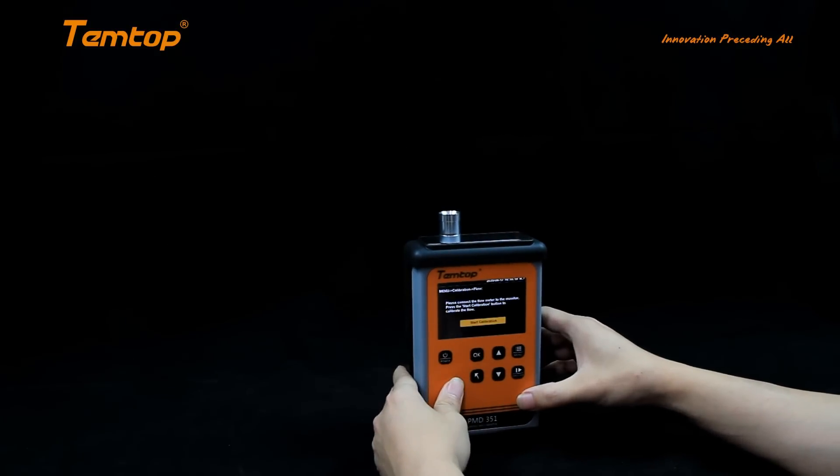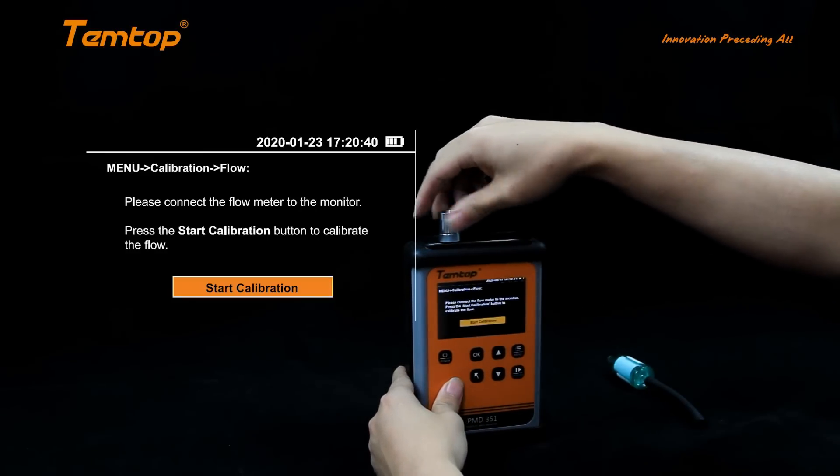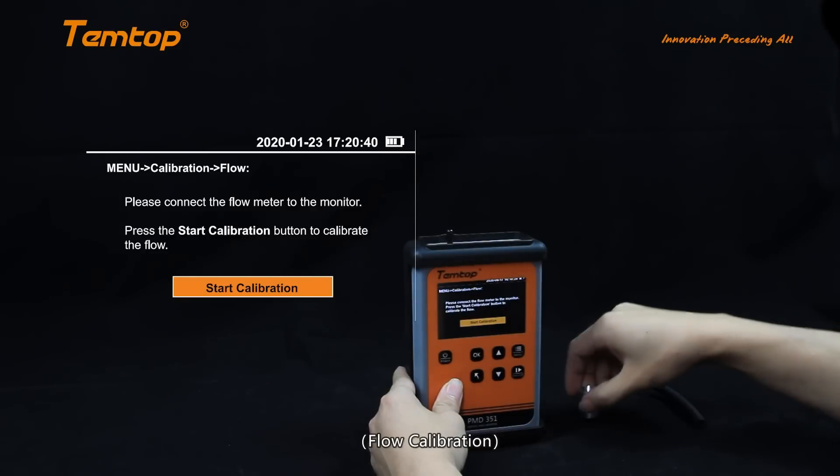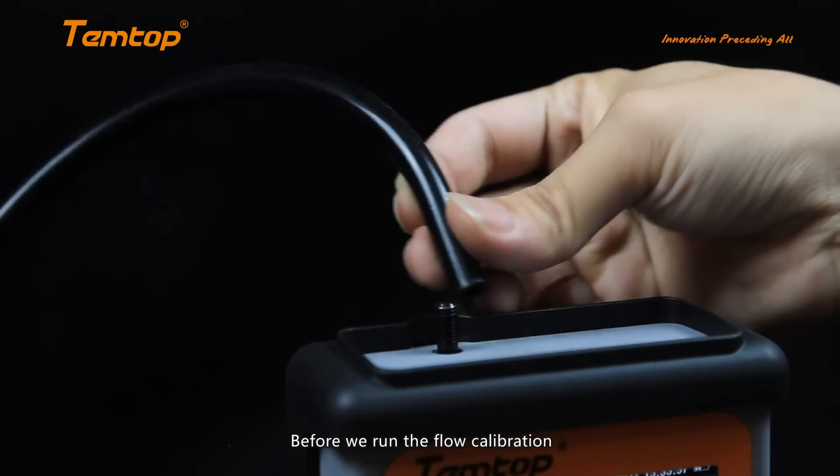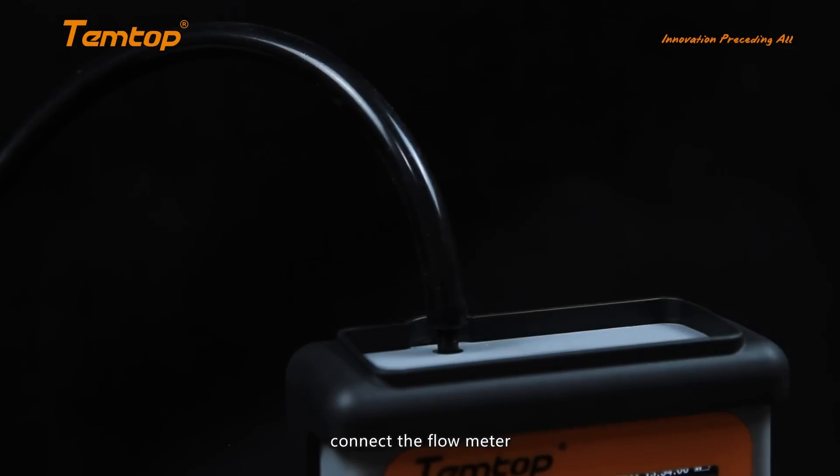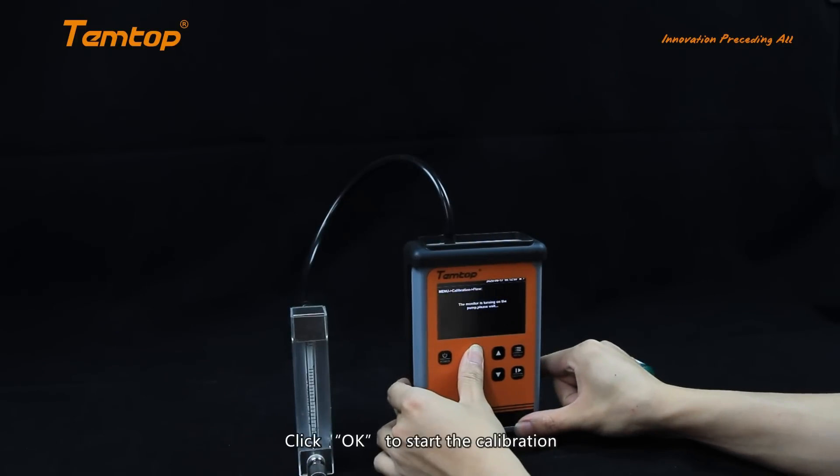Flow Calibration. Before we run the flow calibration, remove the intake cover and connect the flow meter. Click OK to start the calibration.